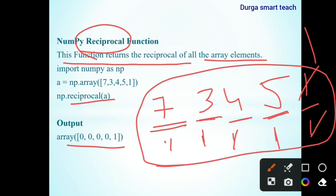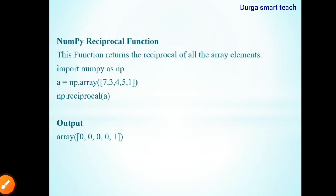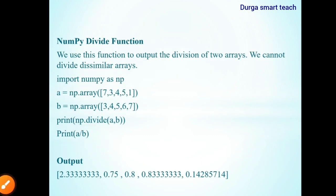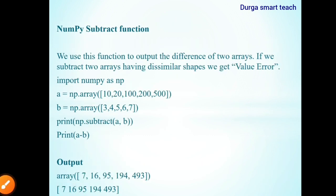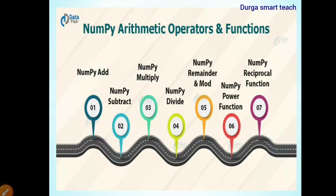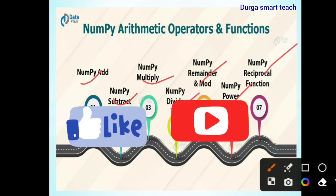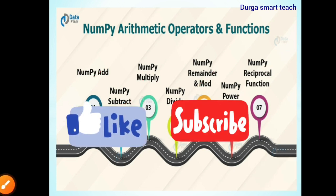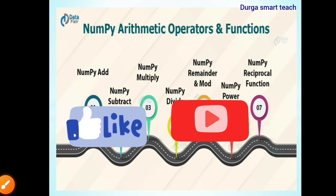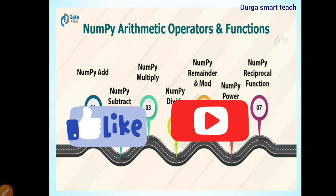So in total there are 7 types of arithmetic operations: add, subtract, multiply, divide, mod, power, and reciprocal. I hope it is clear. If you have any doubts regarding this video, please comment in the comment section. For more videos please subscribe to my channel. Thank you.